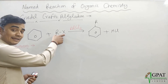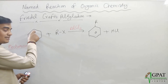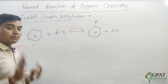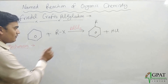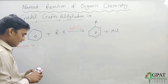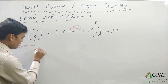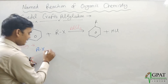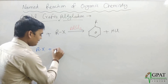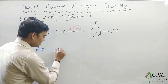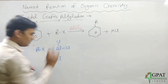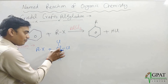Now let's come to the mechanism. In this reaction, the alkyl halide cannot directly react with the benzene molecule because the alkyl halide does not have sufficient reactivity. So firstly, the alkyl halide will react with the Lewis acid aluminium chloride.